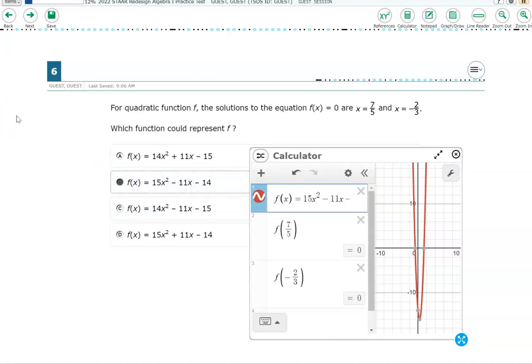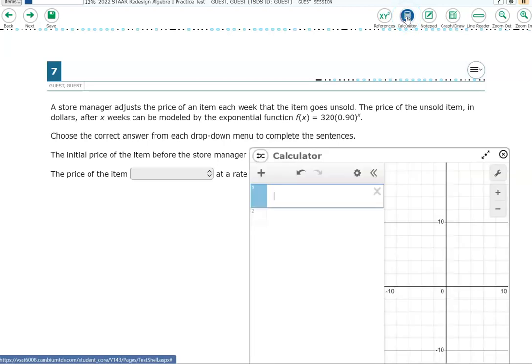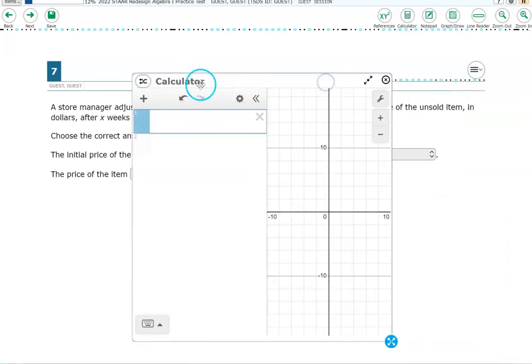And then the last item we're going to look at today is item number 7. So go ahead and click next. And again, you would think, well, is the calculator going to help here? But it really does. I think you'll like this one as well. All right. We have a store manager, and we've got a function, f of x. And we're asked to talk about, let's see, the price of the unsold item in dollars. All right. Well, let's look at some of these drop-downs to see what they're saying. They're giving us money, the initial price. Another word for initial means starting. The price of each item and the percent. All right. Well, this, I really, really like using tables for these types of items.